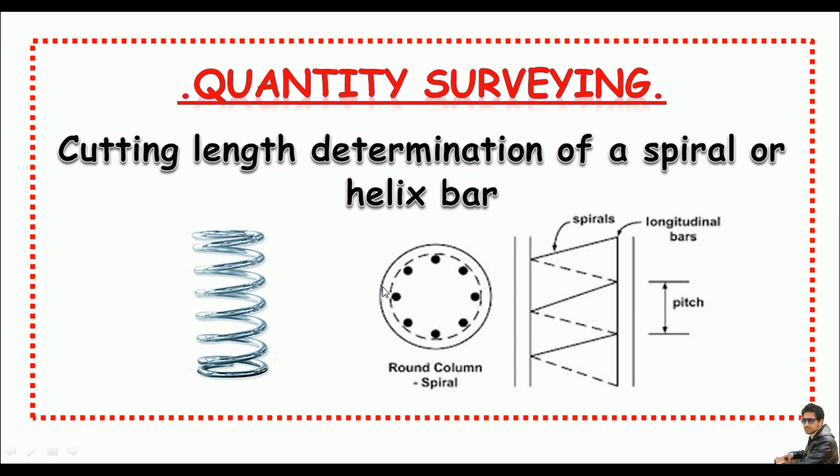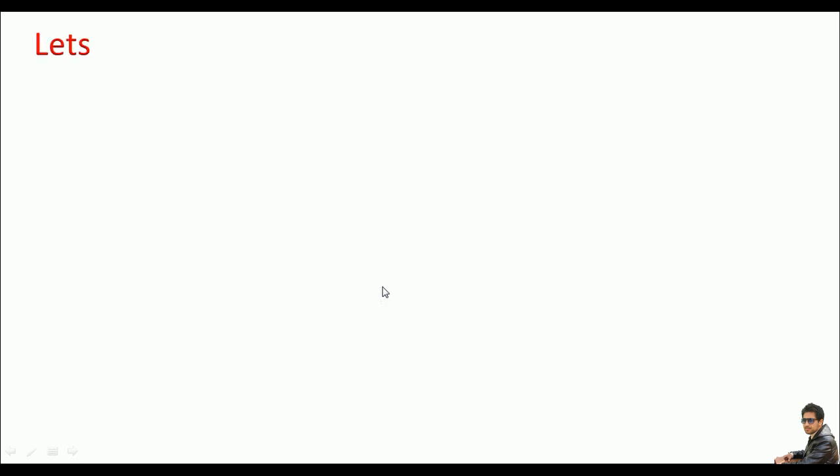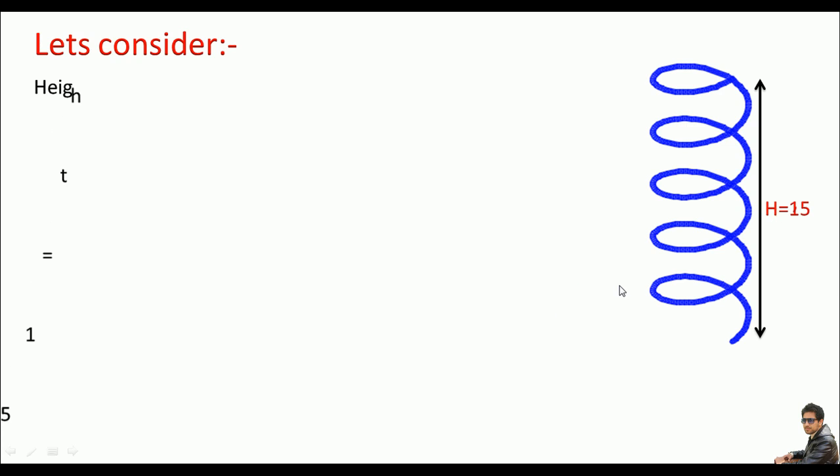So let's do this. Let's consider if we have a spiral bar having height as 15 feet, the top and bottom diameter are also given like 4 feet. The pitch is also given which is the perpendicular distance between two turns and this is just 3 feet.